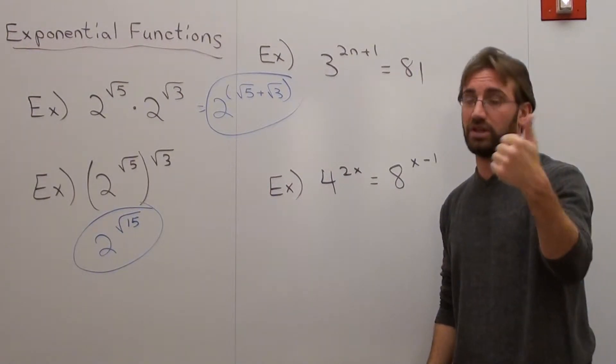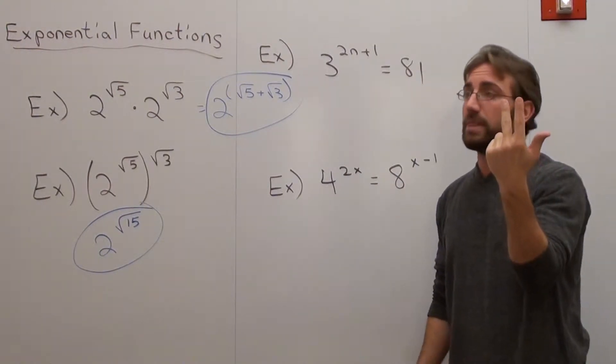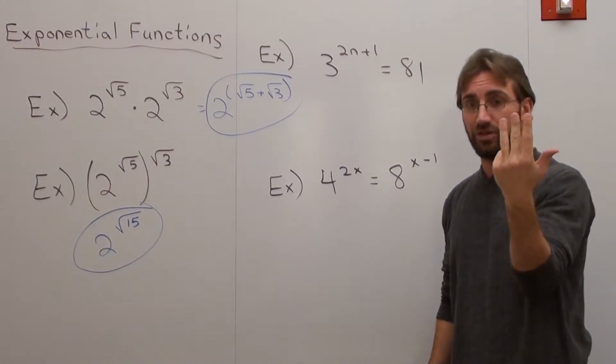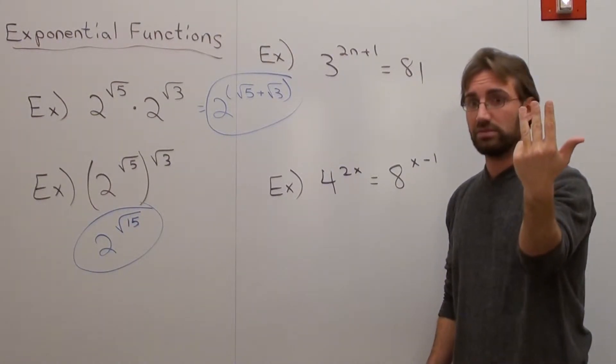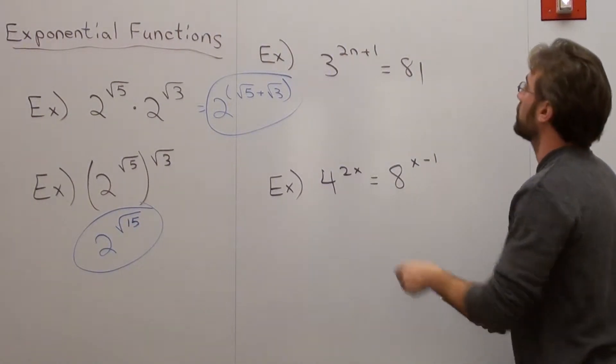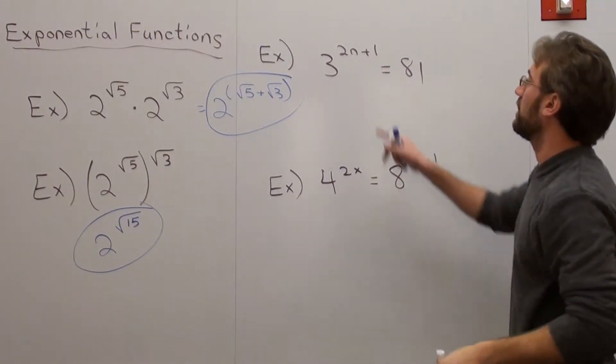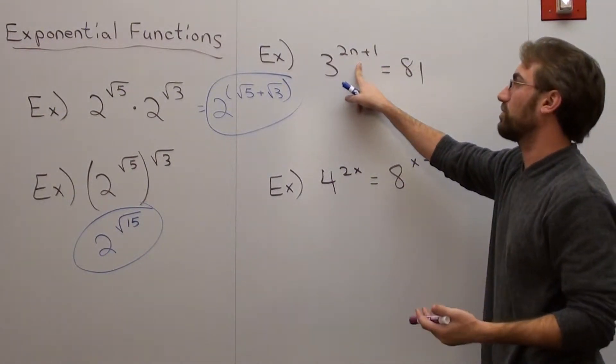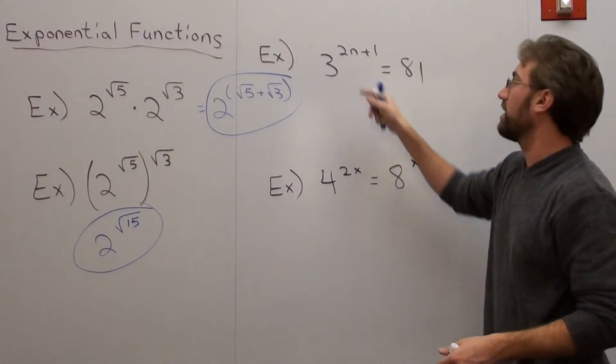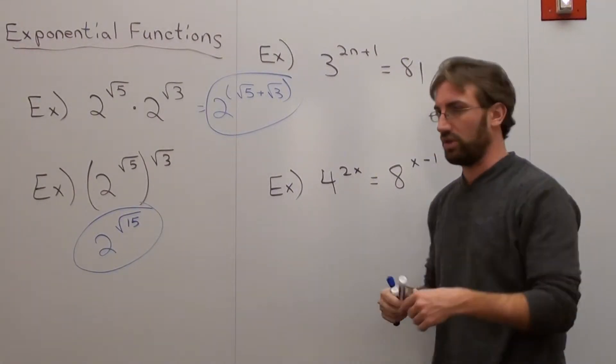3 to the 1st is 3. 3 to the 2nd is 9. 3 to the 3rd is 27. 3 to the 4th is 81. So 3 to the 4th is 81. Well, so now I've got to figure out what my n is going to be in order to make that true. And we'll figure out what that is. But I'm going to show you a technique in order to solve this properly.